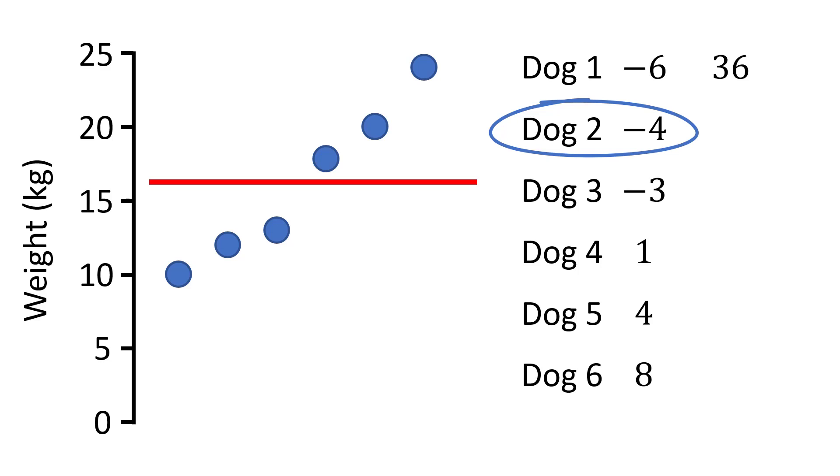And dog 2, negative 4 multiplied by negative 4 becomes 16. And again this is done for all of the values. And it's worth noting here that because we are squaring these values all variance values will end up being positive. You cannot get a negative variance value.